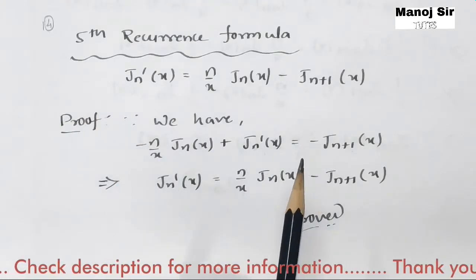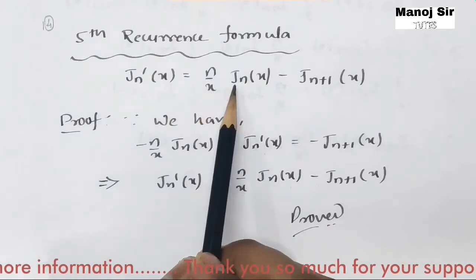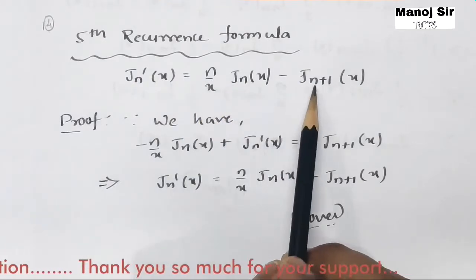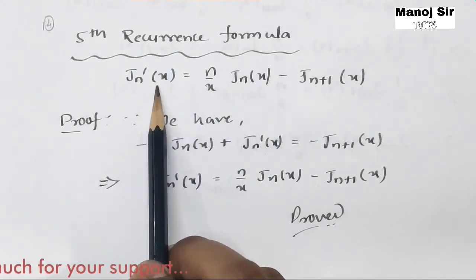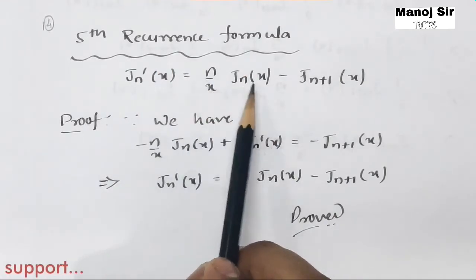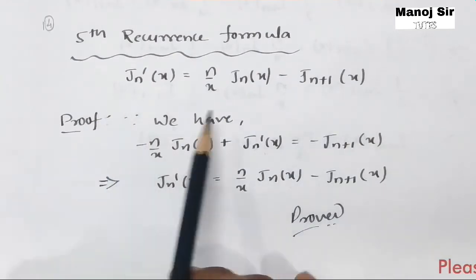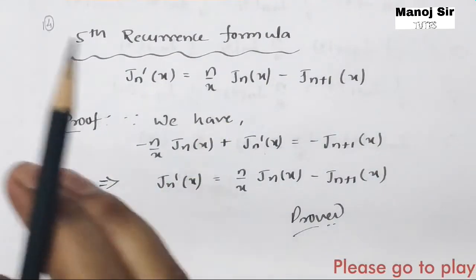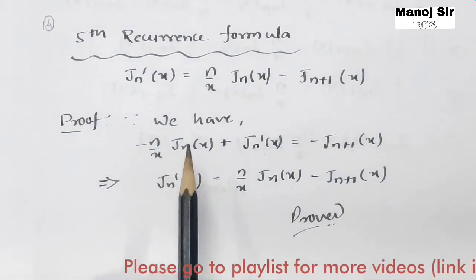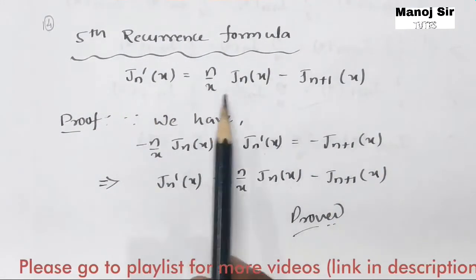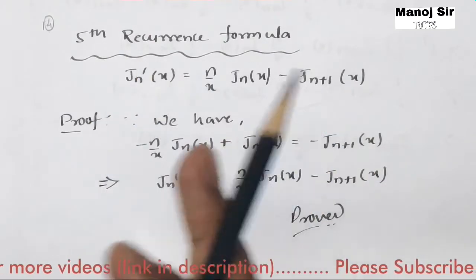The fifth recurrence formula is: jn'(x) equals n upon x times jn(x) minus jn+1(x). You need to remember all these formulas — first through sixth recurrence formula — okay.